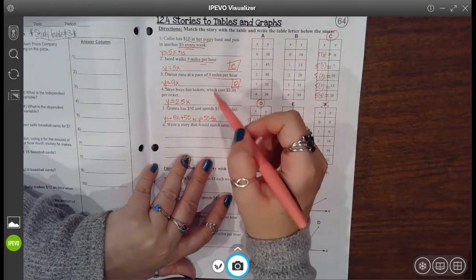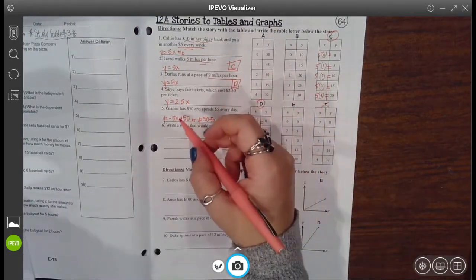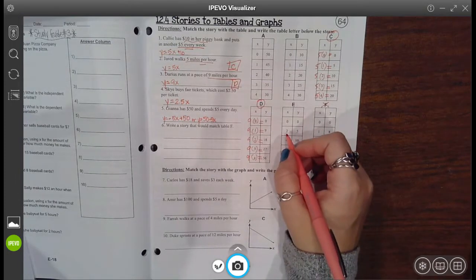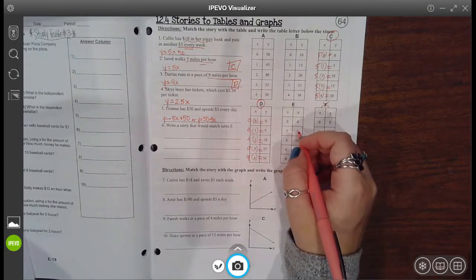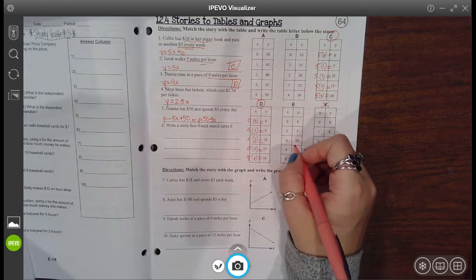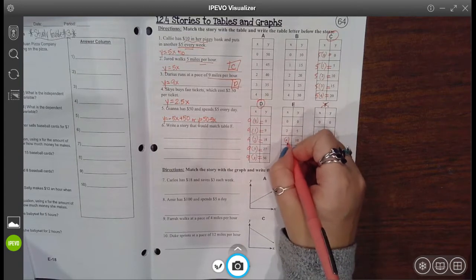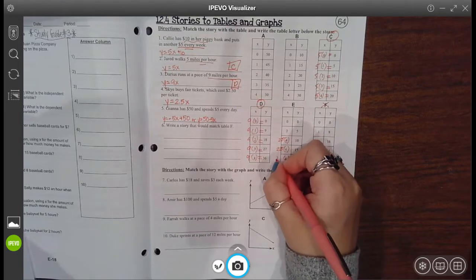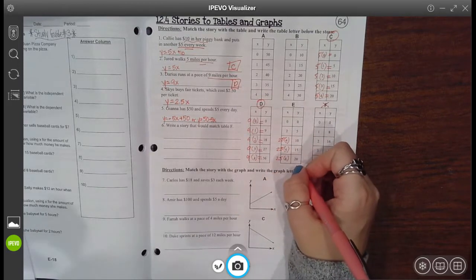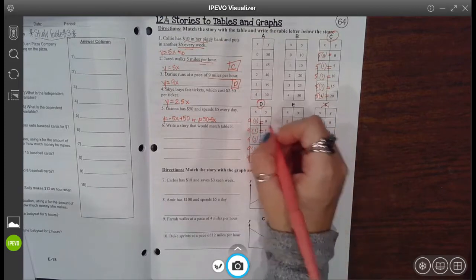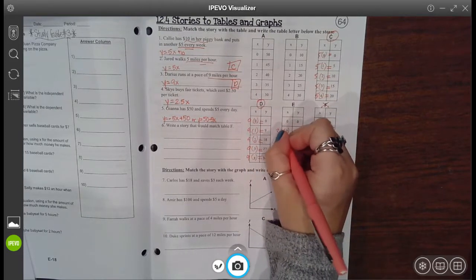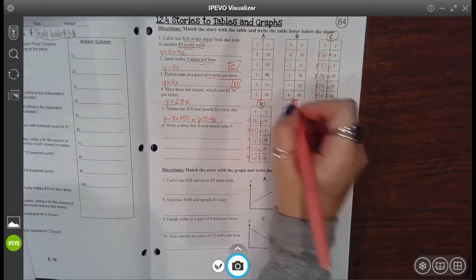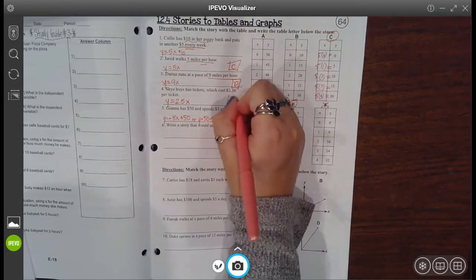Those were my two easy ones. So now this one is 2.5x. So let's see, 2 times 2.5 is 5, 4 times 2.5, plug that in, yes. Okay, so here if we always multiply these by 2.5 we get our matching y's. So this table is 2.5 times x. So E matches 4.